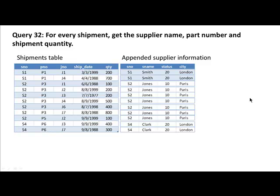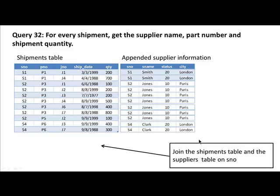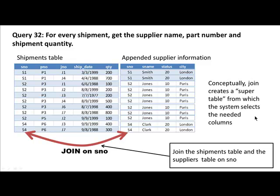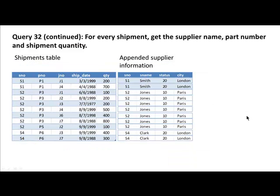To be sure that we understand what JOIN is: for every shipment, get the supplier name, part number, and shipment quantity. We take the shipment table, and since we want the supplier name, we need the supplier table. We join the two tables on the supplier number field. Supplier number s1 matches s1, s2 matches s2, s4 matches s4, and this process is called joining the two tables on the supplier number field.